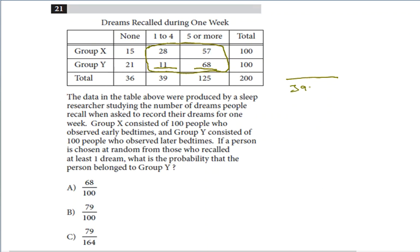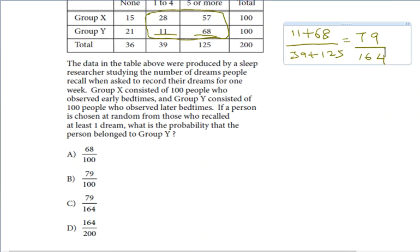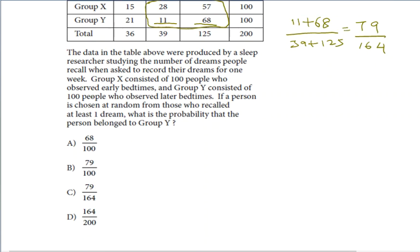So that is 39 plus 125, and on the numerator you have 11 plus 68. So that equals 79 divided by 164. C is our answer. 79 over 164, C is the answer.